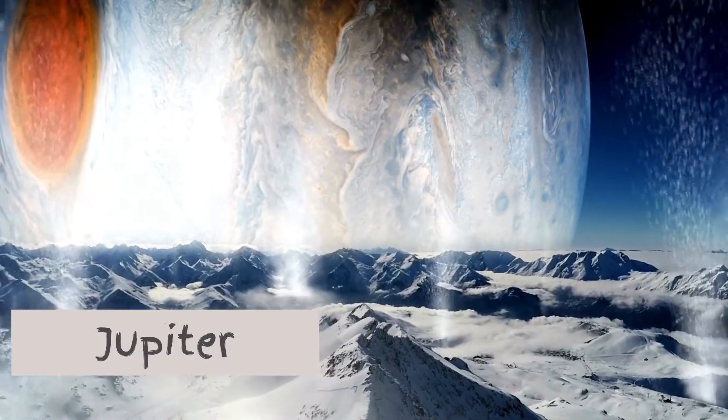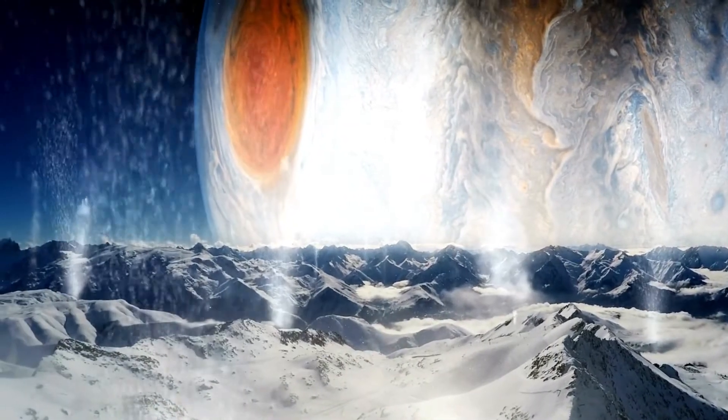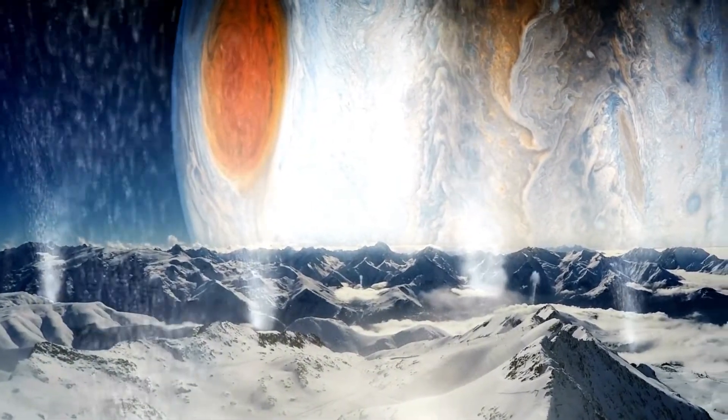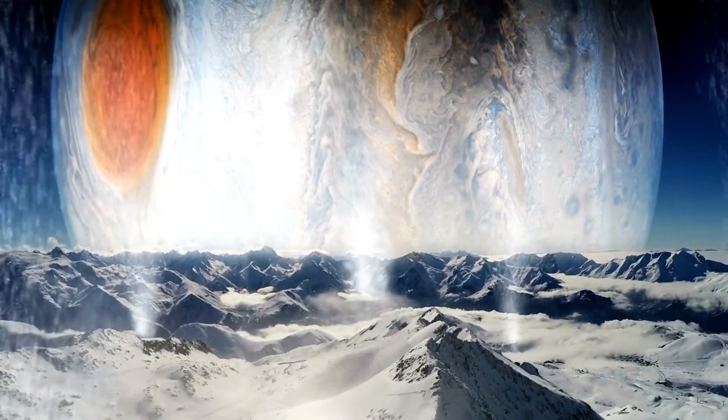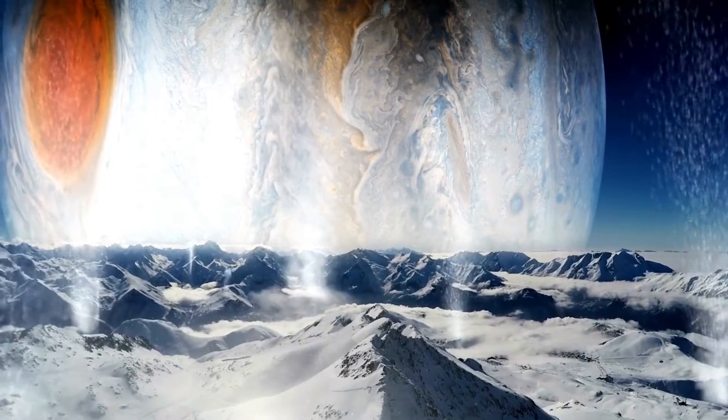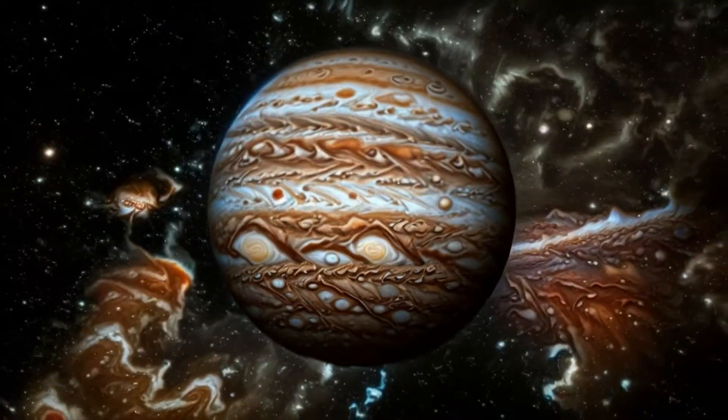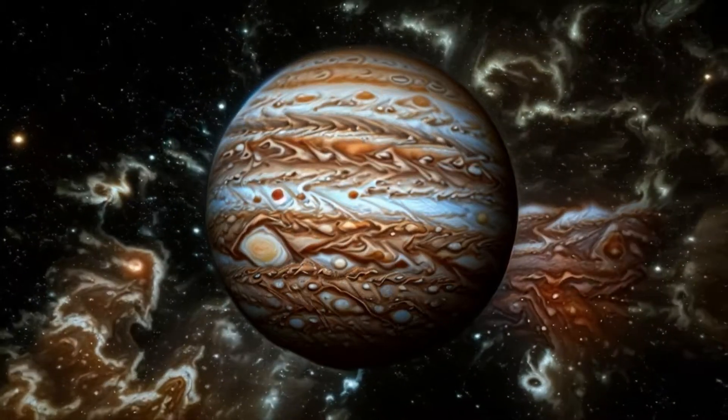Jupiter, the giant with its stormy red spot, a swirling hurricane that never seems to stop. Its size is immense, it's the biggest by far, with over 70 moons, a true cosmic bazaar. Jupiter's atmosphere is filled with great storms, and its famous great red spot takes many forms.